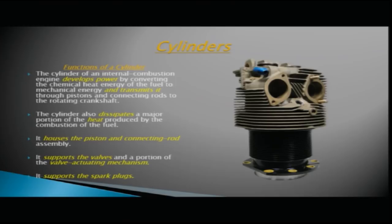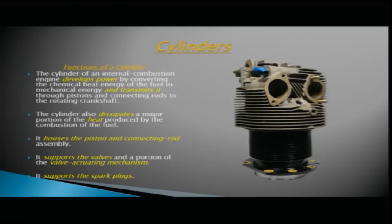The piston and connecting rods are housed in the cylinder. The cylinder also supports the valves and a portion of the valve operating mechanism. You can see the intake and exhaust holes, the spark plug connection, the cylinder head area, and the cylinder barrel. The main power section of the engine is the cylinder assembly together with the pistons, connecting rods, and crankcase section.